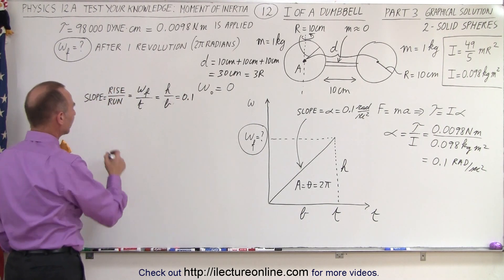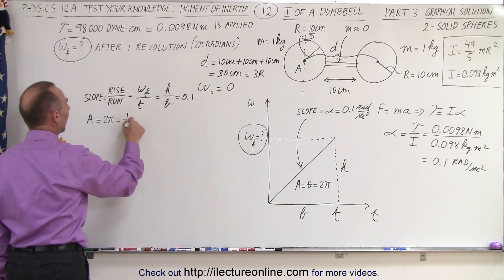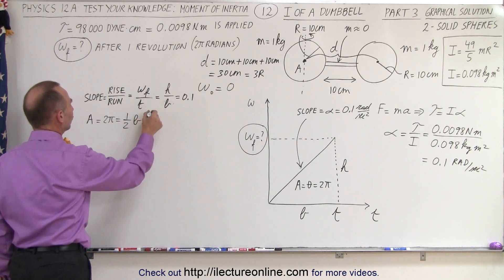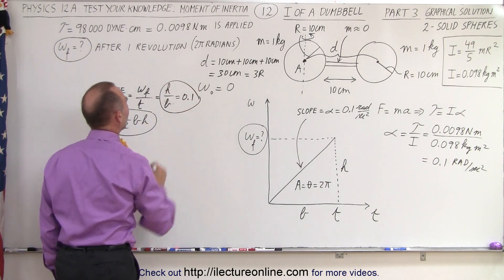We can also say that the area of the triangle, which is equal to 2 pi radians, is one half the base times the height. So, here we have 2 pi is one half base times height, and we have a relationship between height and base.